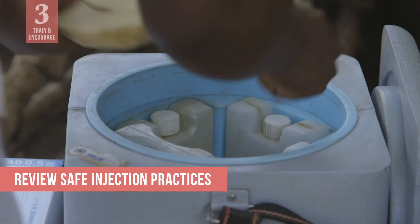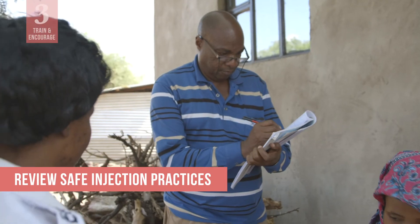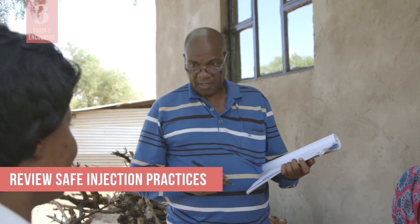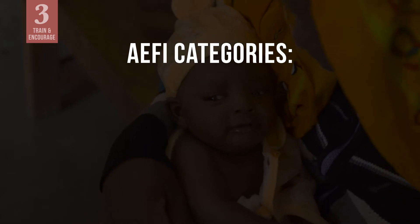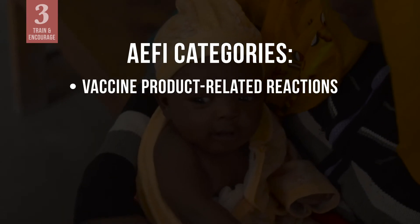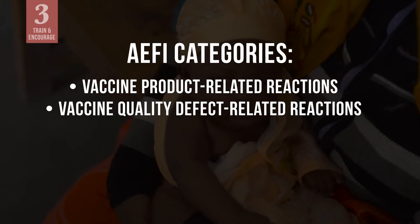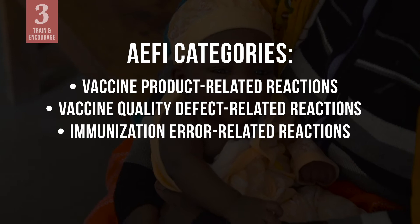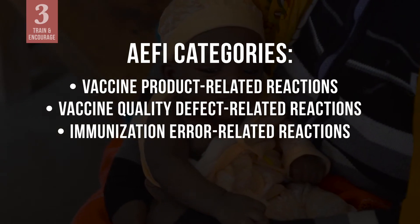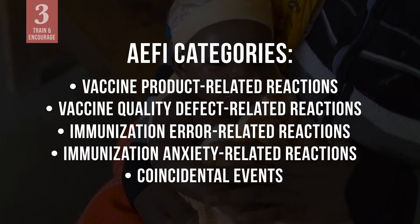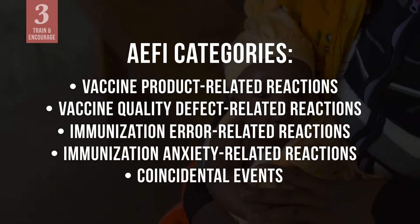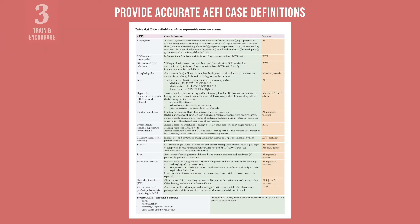Next, train and encourage staff to detect and report AEFIs. Regularly review safe injection practices with health workers to help minimize AEFIs due to unsafe practices. Explain the different categories of AEFIs that can occur: adverse events can be caused by inherent properties of the vaccine product, a quality defect of the vaccine product, an immunization error such as inappropriate vaccine handling, prescribing, or administration with the wrong diluent, anxiety about the immunization, or it may be coincidental — an event that occurs after immunization but is not caused by the vaccine product, immunization error, or anxiety.